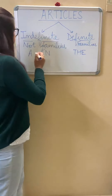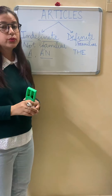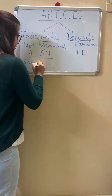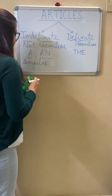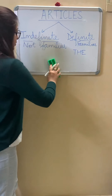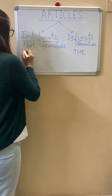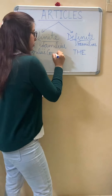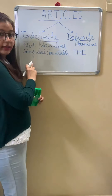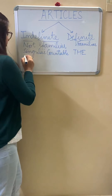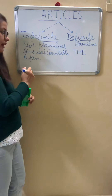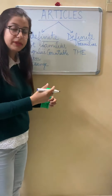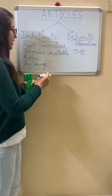The second difference: a and an are used for singular countable nouns. For example, a pen and an orange. Pen is a singular countable noun, and orange is again a singular countable noun.